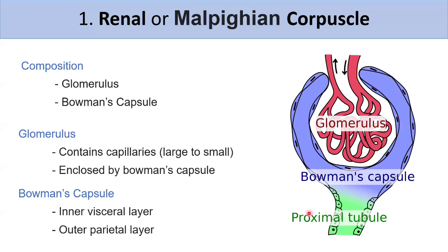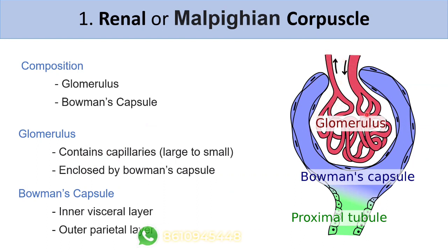The renal corpuscle is made up of the glomerulus, which is an artery structure, and its cover, the Bowman's capsule. The Bowman's capsule has two layers: the inner visceral layer and the outer parietal layer.